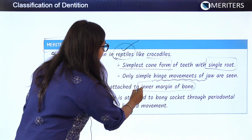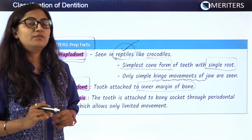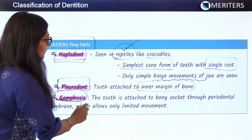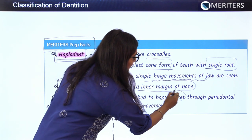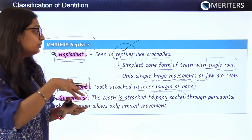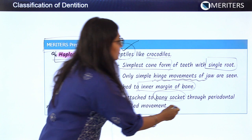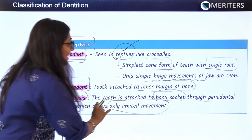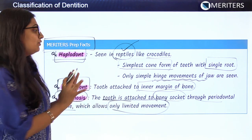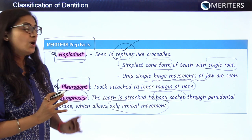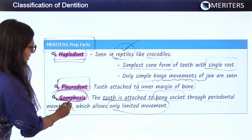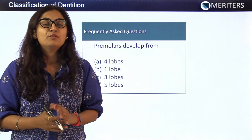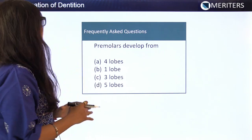Gomphosis is the term used when a tooth is attached to a bony socket. Inside the socket, the tooth is held through the periodontal membrane, which allows limited movement — more than hinge movement, but limited due to the periodontal membrane and bony socket. The word gomphosis refers to this type of attachment where a bony socket is present and the tooth is attached through a membrane called the periodontal membrane.